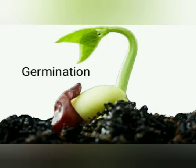Next, we have germination. The seed ends up on the ground and it needs air, water, and soil to grow. When a seed begins to grow, this is called germination. The first growth will be some small roots, then the stem will grow.